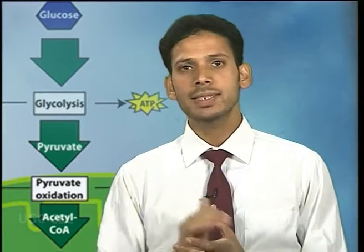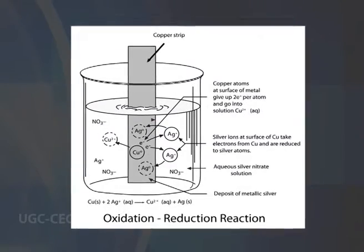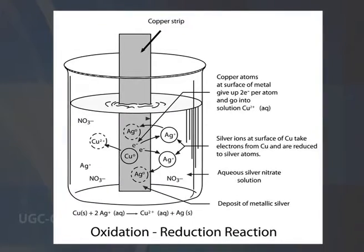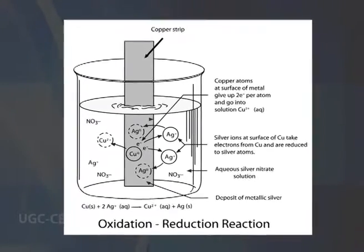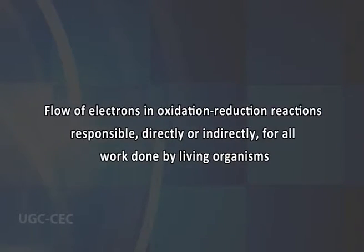Equally important is another kind of transfer — electron transfer — in oxidation-reduction reactions. These reactions involve the loss of electrons by one chemical species, which is thereby oxidized, and the gain of electrons by another, which is reduced. The flow of electrons in oxidation-reduction reactions is responsible, directly or indirectly, for all work done by living organisms.